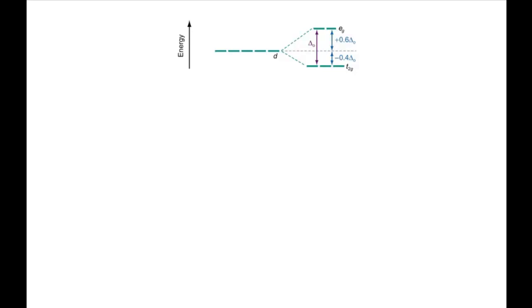There are two possibilities for the fourth electron, though. It can go into the EG orbital, which gives rise to a high spin complex. This involves occupying a higher energy orbital but avoids pairing electrons.